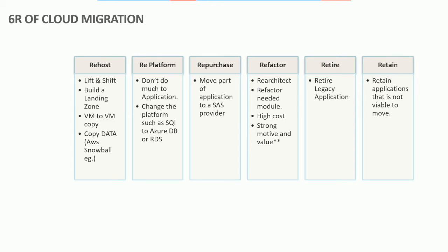Once that matches up to at least an extent, you do a VM-to-VM copy — whatever is on your on-premises server, you move it to the cloud. Then you copy data. If the data is in terabytes, there are different solutions from different cloud providers. AWS provides you with Snowball, which is a briefcase-type device where you can host your data.